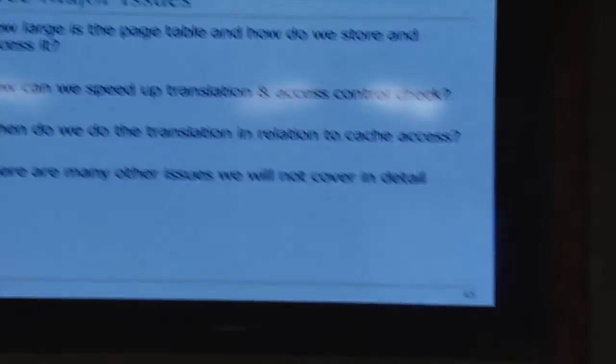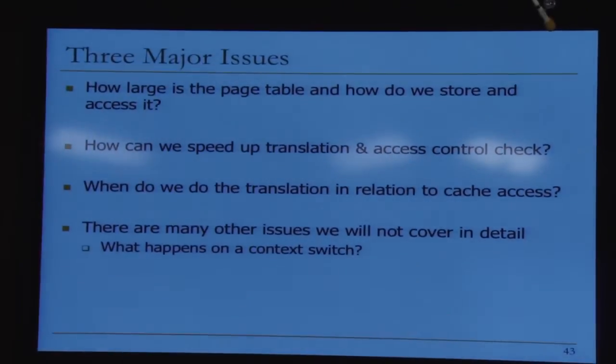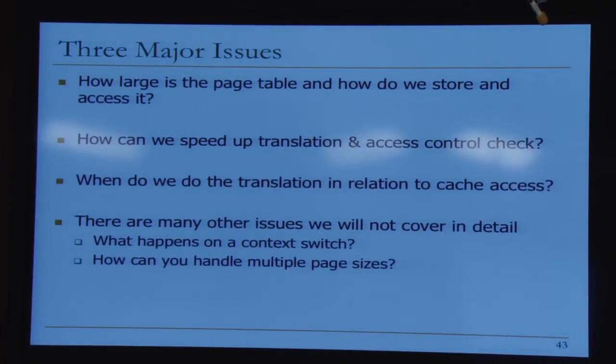Three major issues in virtual memory: (1) How large is the page table and how do you store/access it? (2) How do you speed up translation and access control — instead of accessing memory twice for every access, can we do better? (3) When do you do translation relative to cache access? Other issues include what happens on a context switch (what do you do to TLBs?) and how to handle multiple page sizes efficiently.